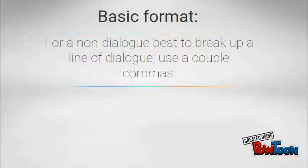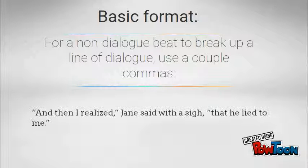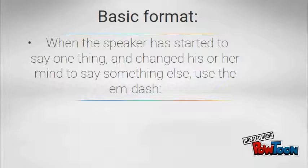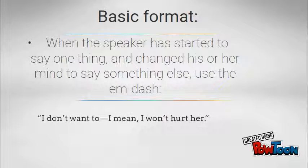For a non-dialogue beat to break up a line of dialogue, use a couple of commas. For example: 'And then I realized,' Jane said with a sigh, 'that he lied to me.' When the speaker has started to say one thing and changed their mind to say something else, use the em dash: 'I don't want to — I mean I won't hurt her.'